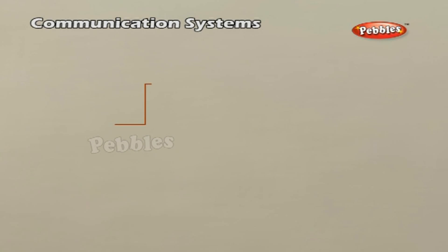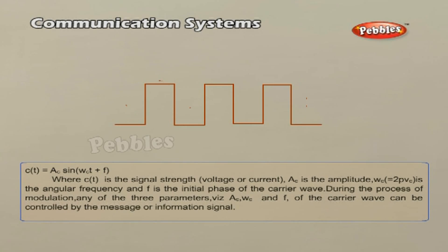This points out towards a possible solution by using communication at high frequencies and allotting a band of frequencies to each message signal for its transmission. We take the help of high frequency signal known as the carrier wave and a process known as modulation which attaches information to it. The carrier wave may be continuous, that is sinusoidal, or in the form of pulses as shown in the figure.